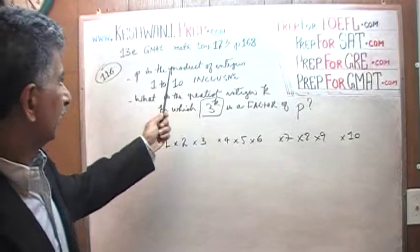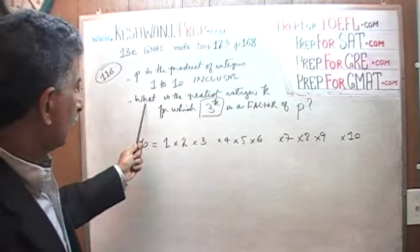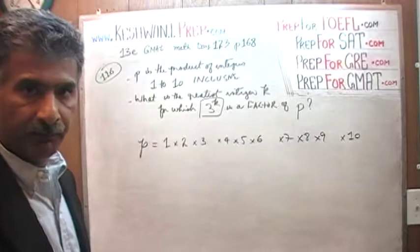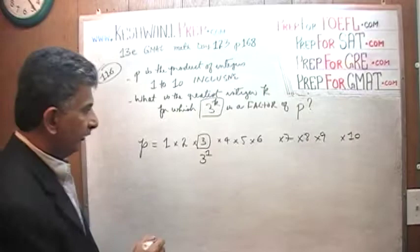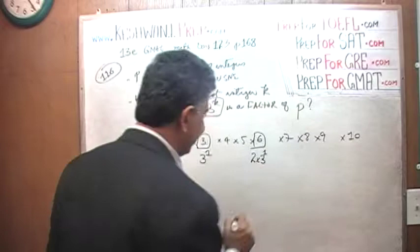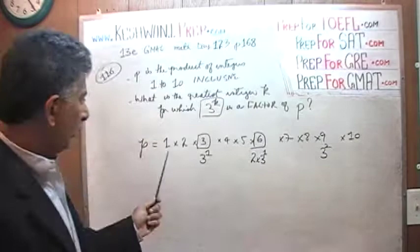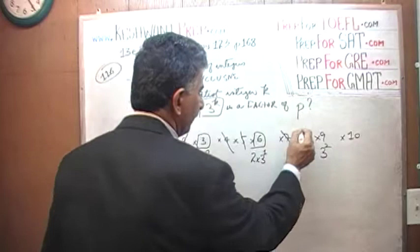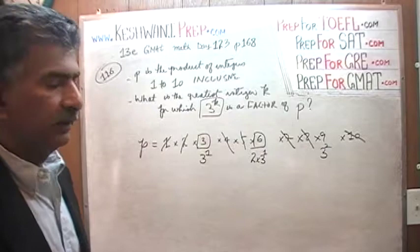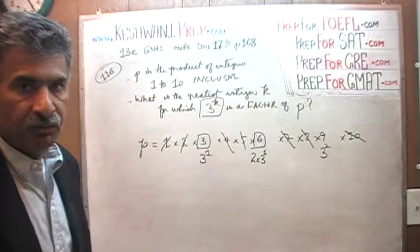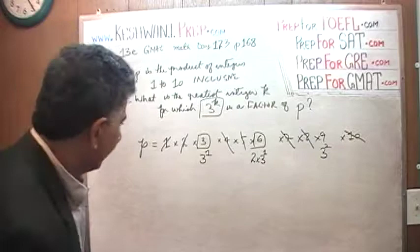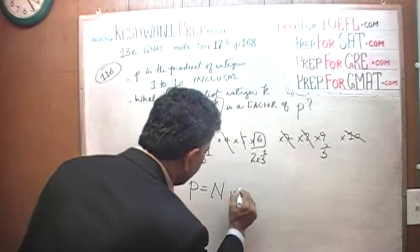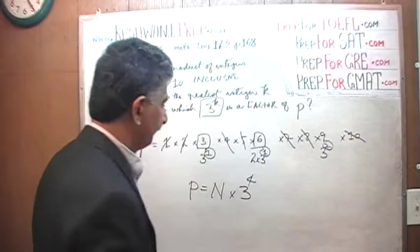Let's start with P as the product of all integers 1 through 10 inclusive. What is the greatest integer K for which 3 raised to K is a factor of P? The 3 can be written as 3 raised to 1. The 6 can be written as 2 times 3 — that's another power of 1. The 9 can be written as 3 raised to 2. All other numbers — 1, 2, 4, 5, 7, 8, 10 — play no role because they have no factor of 3. So the total power is 1 + 1 + 2 = 4. The greatest integer K in this case is 4.